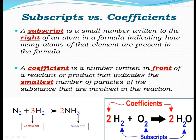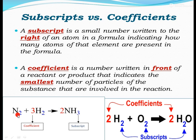Subscripts and coefficients: A subscript is a small number written to the right of an atom in a formula indicating how many atoms of that element are present. A coefficient is a number written in front of a reactant or product indicating the smallest number of particles involved in the reaction. For example, 3 in front of H2 is the coefficient, while the 2s and 3 within the formula are subscripts. In N2, the subscript 2 indicates there are 2 atoms of nitrogen in one molecule of nitrogen gas.